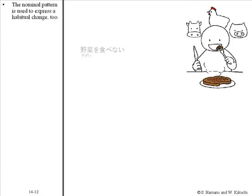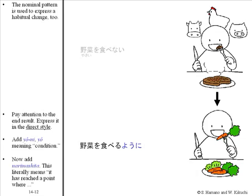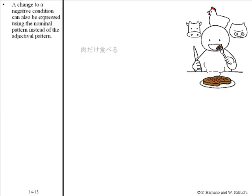The nominal pattern is also used to express habitual change. Pay attention to the end result and express it in the direct style. Add よう に — よう meaning 'condition.' Now add narimashita. This literally means 'it has reached a point where.' For example: 野菜を食べるようになりました. A change to a negative condition can also be expressed using the nominal pattern instead of the adjectival pattern.